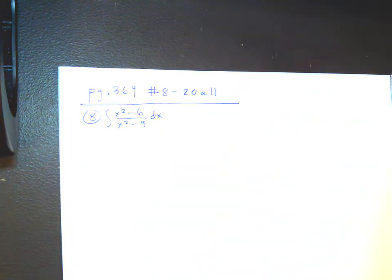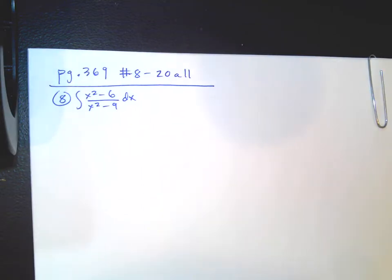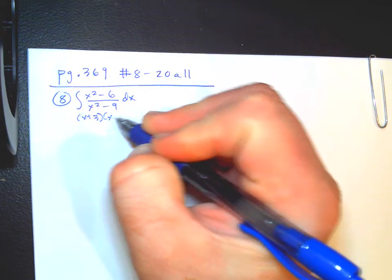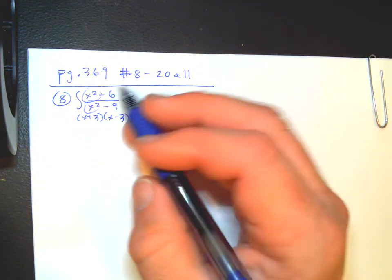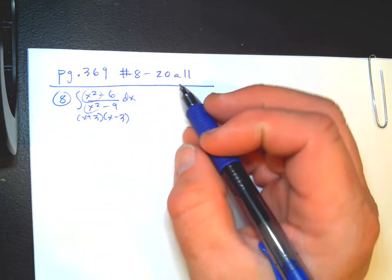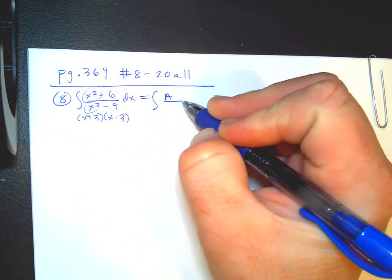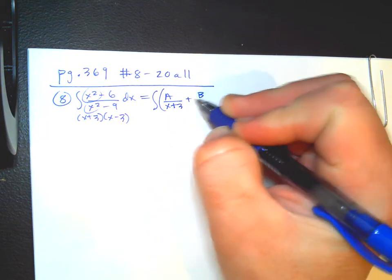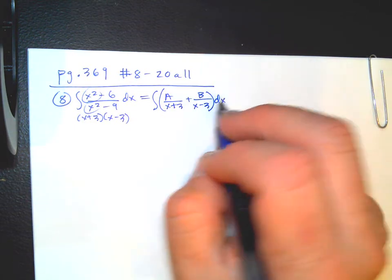Here's a mistake people made. You thought maybe you can do partial fractions — like X plus 3, X minus 3. But the problem is the degree at the top and bottom aren't equal. So you actually need to do long division first, and it changes your answer. I'll show you what you get if you did partial fractions right away.